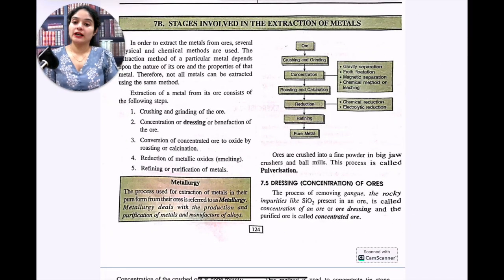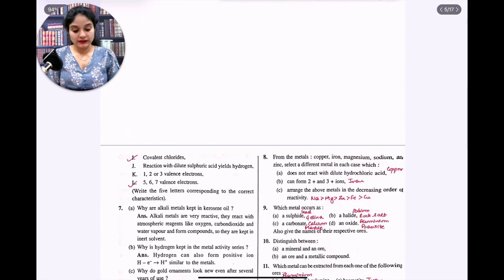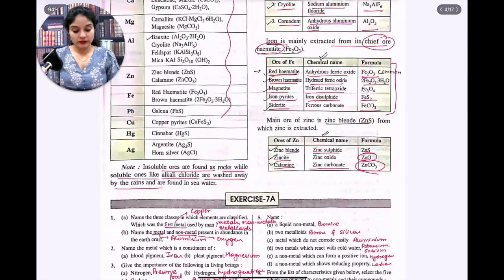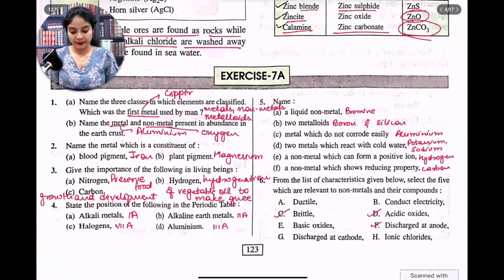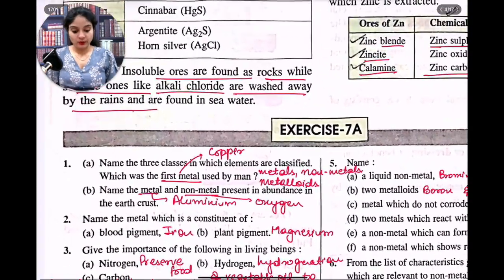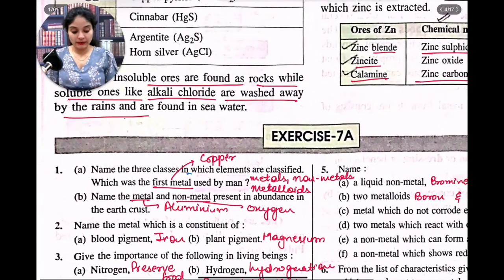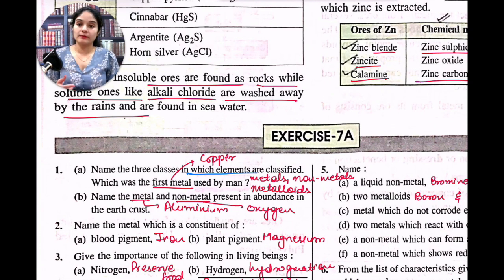Okay students, let's start today's session. Today's session we are working on these questions right here — that is Exercise 7a. Name the three classes in which elements are classified. The three classifications of elements are metals, non-metals, and metalloids.